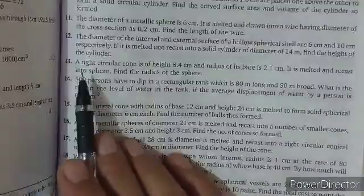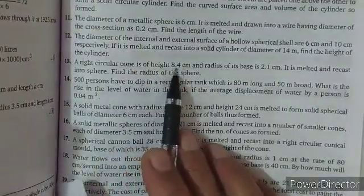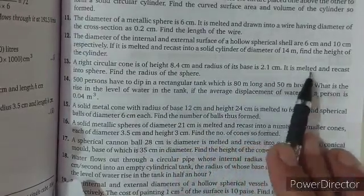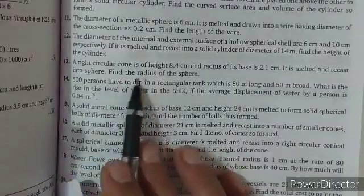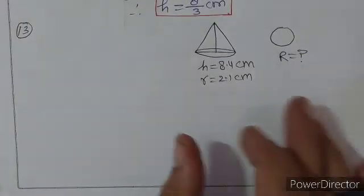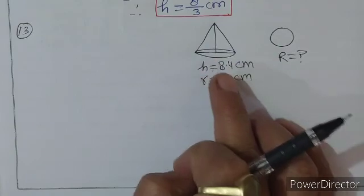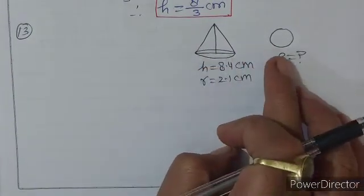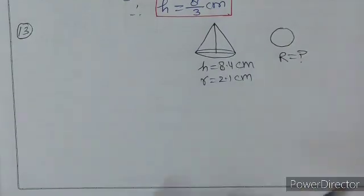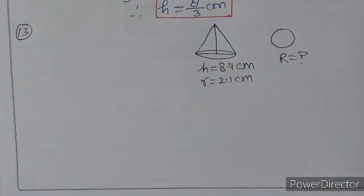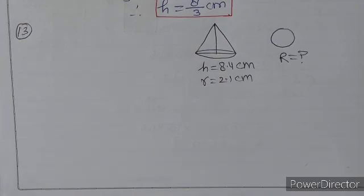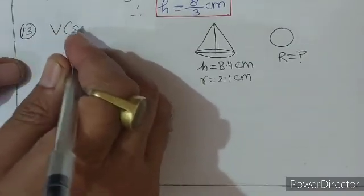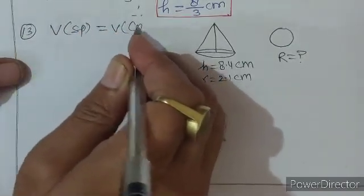Question number 13: A right circular cone is of height 8.4 cm and radius of base is 2.1 cm. It is melted and recast into a sphere. Find the radius of the sphere। एक cone है जिसकी height 8.4 cm और radius 2.1 cm है। इसे melt करके sphere बनाया गया। एक चीज़ को melt करके दूसरी बनाई गई — दोनों के volume equal होंगे।